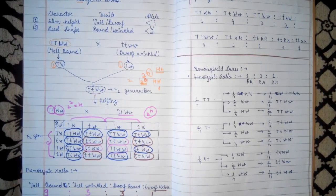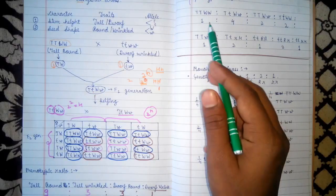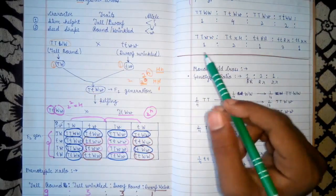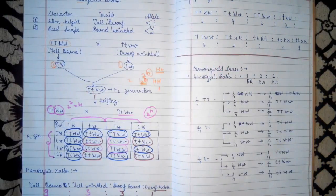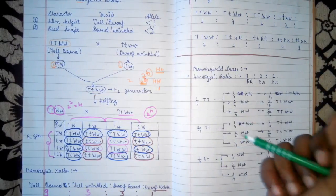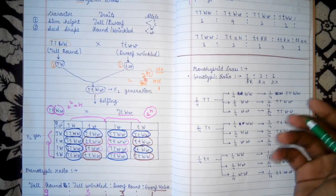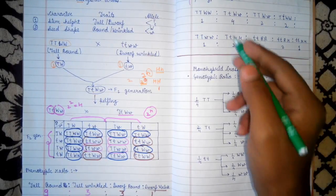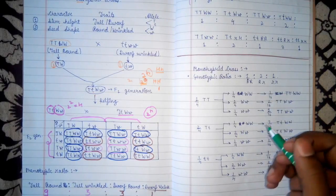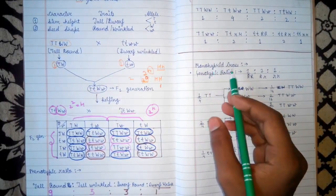In our previous video, we saw how to find the dihybrid cross and its phenotypic and genotypic ratio. To find out the genotypic ratio it is very hard because we have to count the number of alleles, and it is so much time-consuming. So today I will tell you one more way to find out the genotypic ratio. For this, you must know what the monohybrid cross and its genotypic ratio are.